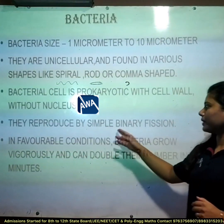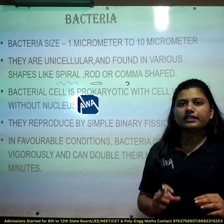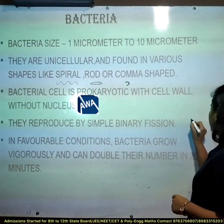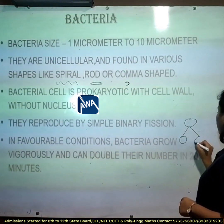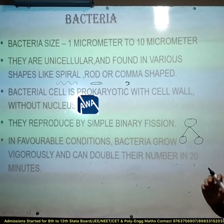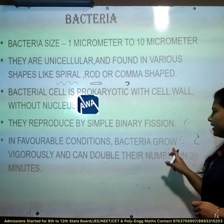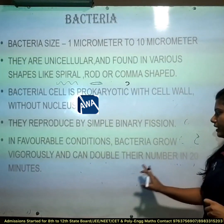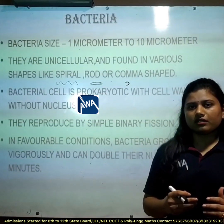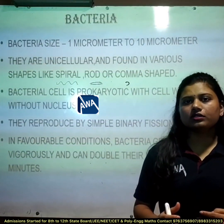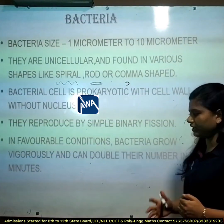Bacteria reproduce by simple binary fission. Binary fission means dividing a single entity into two parts — the bacterium divides itself into two parts. In favorable conditions, bacteria grow vigorously and can double their number in 20 minutes.